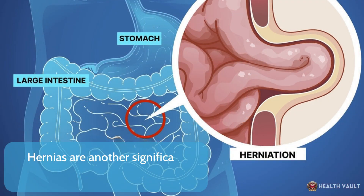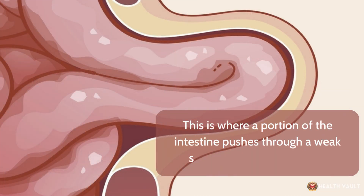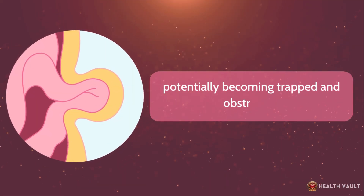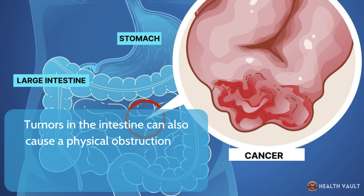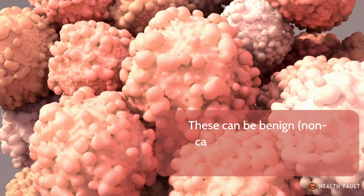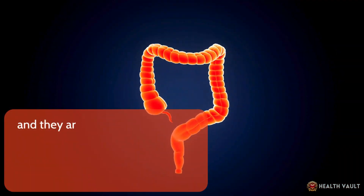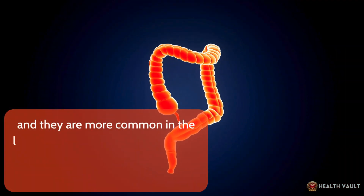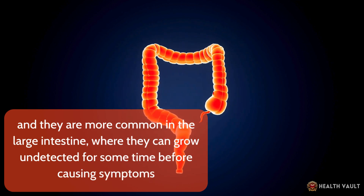Hernias are another significant cause, where a portion of the intestine pushes through a weak spot in the abdominal wall, potentially becoming trapped and obstructed. Tumors in the intestine can also cause a physical obstruction by growing large enough to block the passage of food and fluids. These can be benign or malignant, and are more common in the large intestine, where they can grow undetected for some time before causing symptoms.